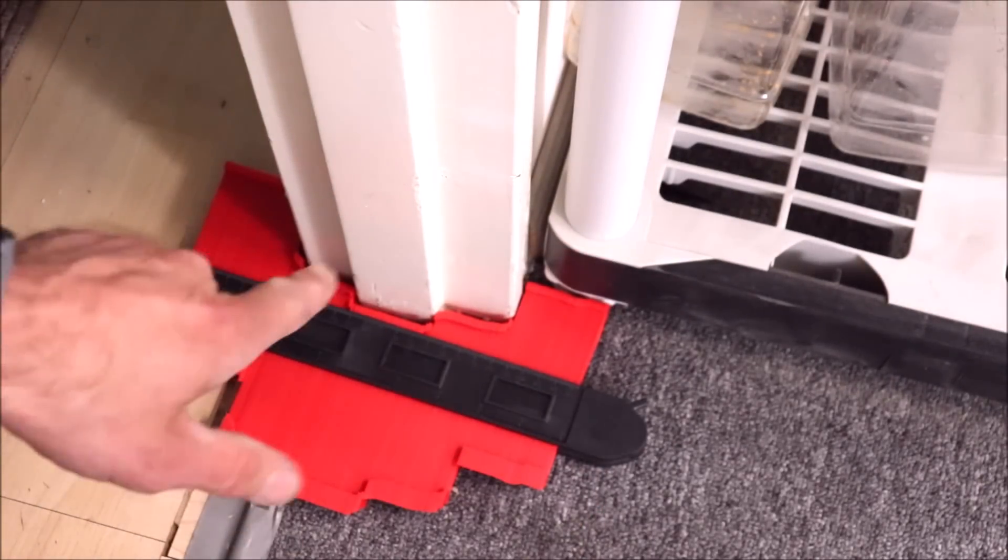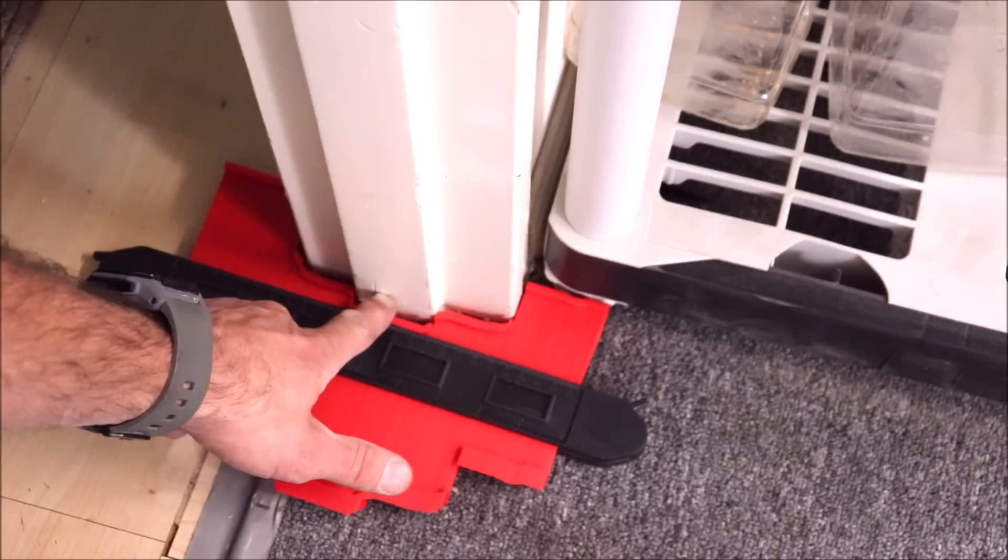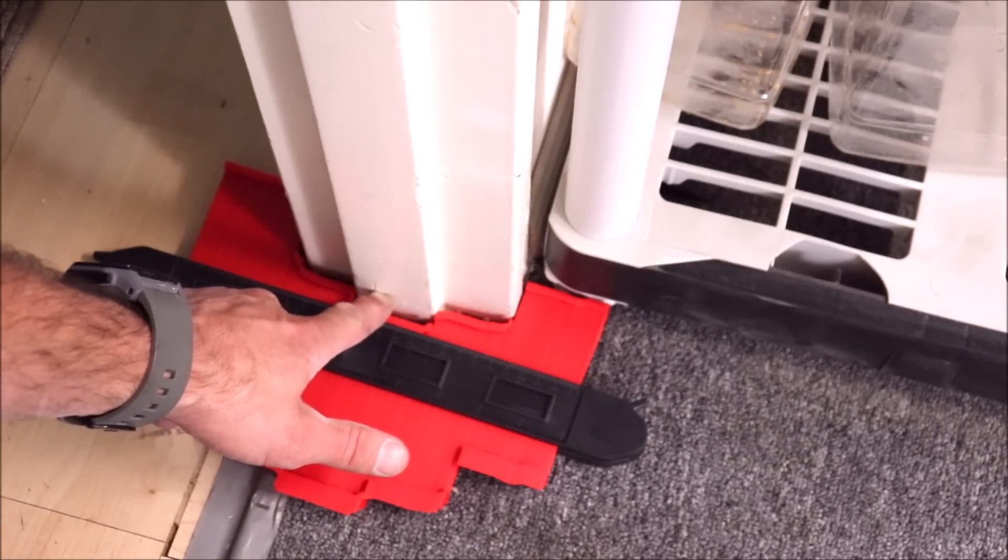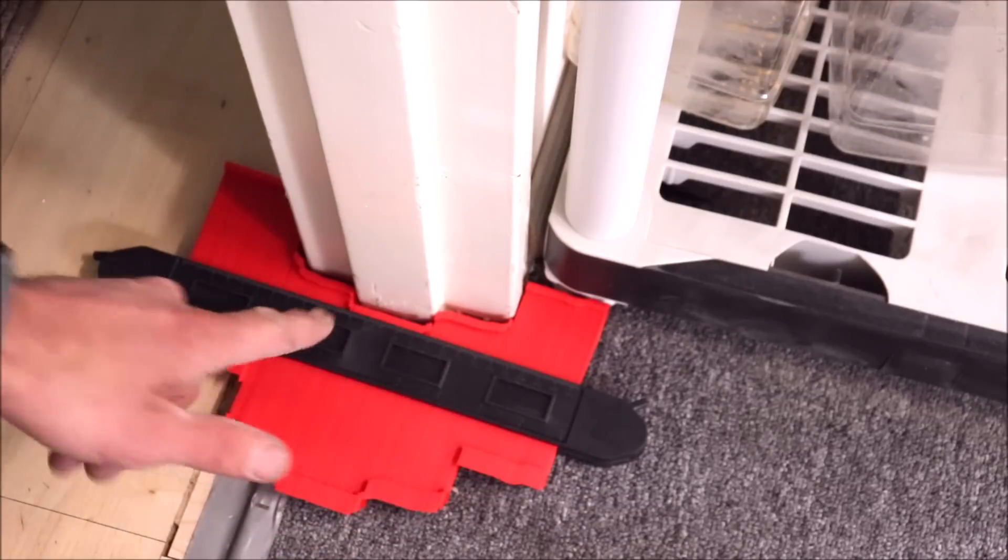But what you really want to do is undercut the door jamb frame and casing and slide your tile underneath for your tile installation.